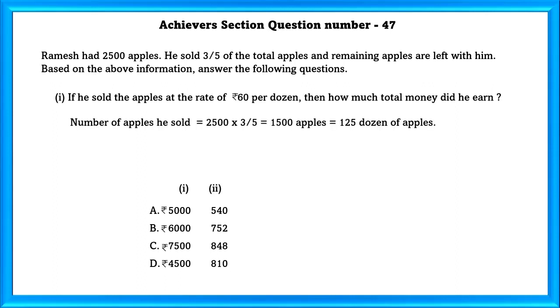Number of apples he sold equal to 2500 into 3 by 5 which is equal to 1500 apples which is equal to 125 dozen of apples. Rate of 125 dozen apples is equal to 125 into 60 which is equal to 7,500.